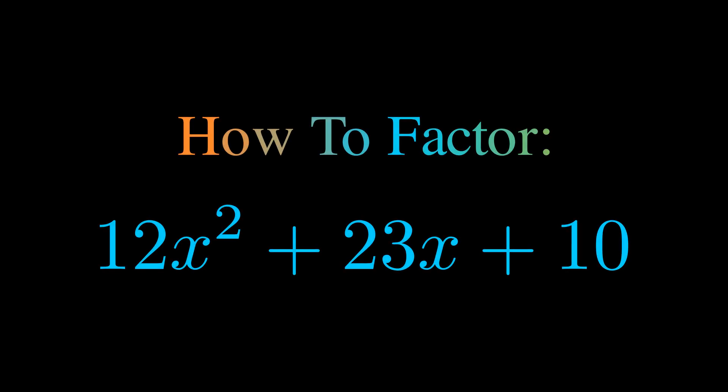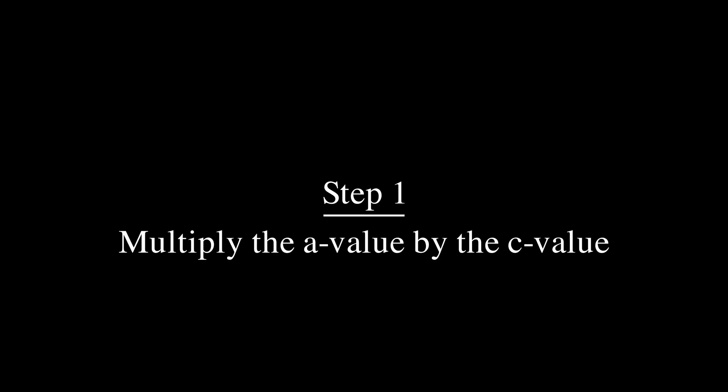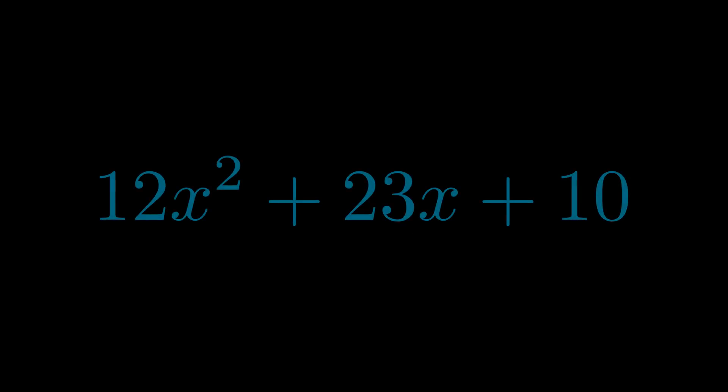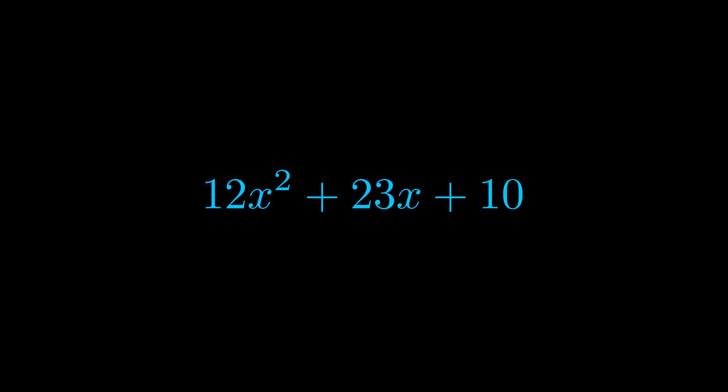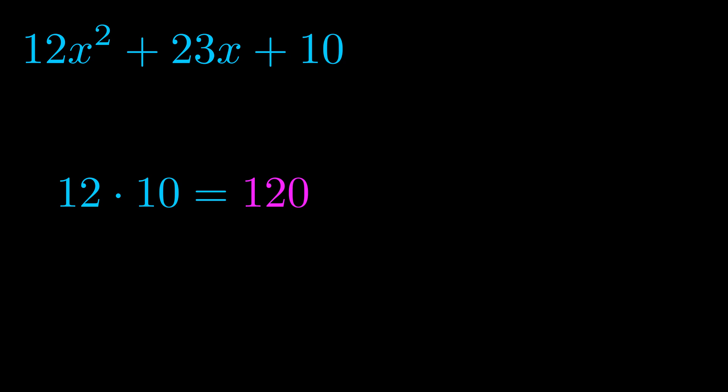In this video we're going to learn how to factor this equation. Step one when factoring an equation of this form is to multiply the a value by the c value. Here we can see that our a value is the coefficient on the x squared term and our c value is the constant term. When we multiply these two values we get this value here in magenta.